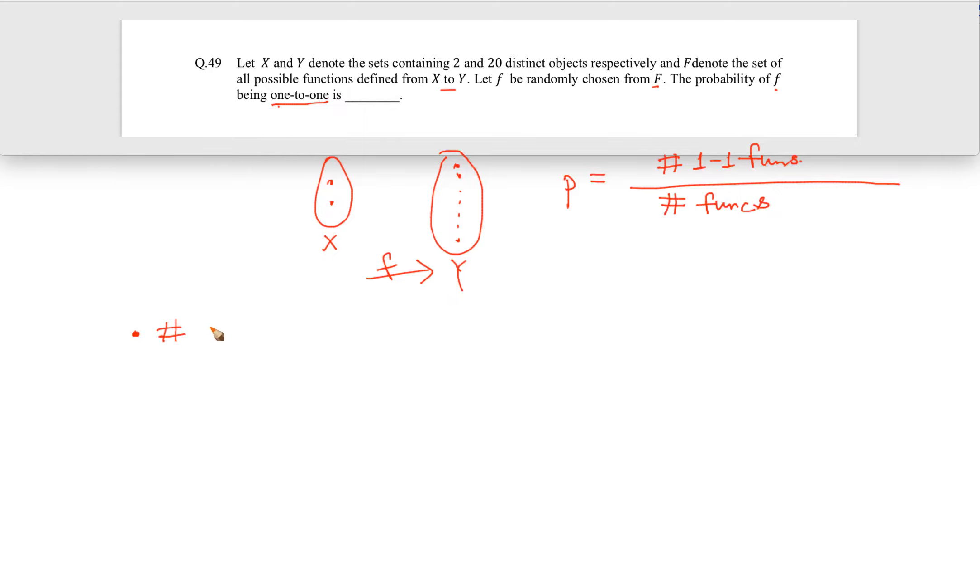Let's figure out what is the total number of functions. Total number of functions in this case, if n is this and m is this, then m raised to the power n. So 20 is here, 2 is here, so total number of functions will be 20 square. Intuitively, this element can be mapped to 20 in 20 ways, this element can also be mapped in 20 ways, so 20 into 20.